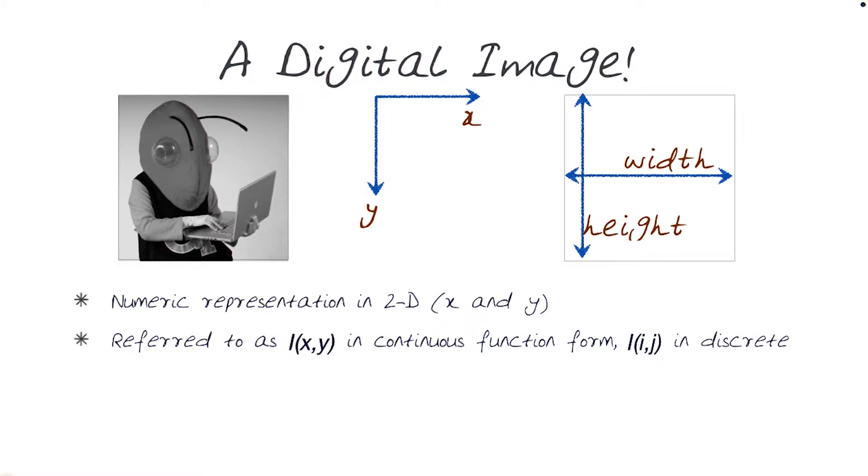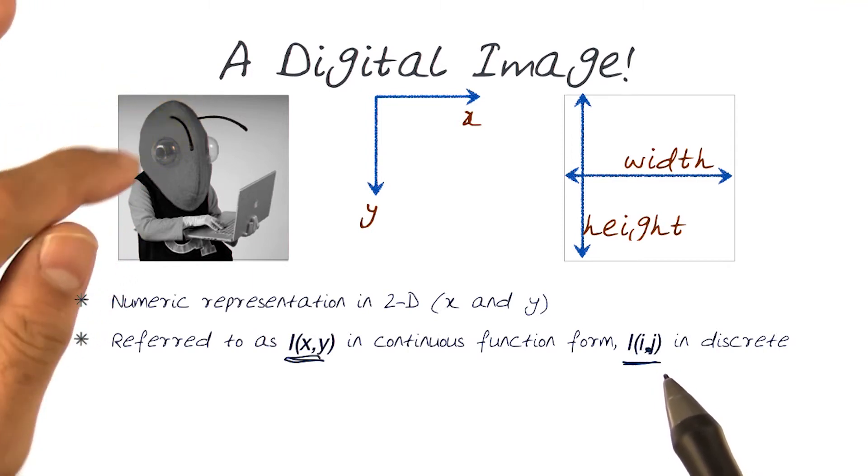The best way to refer to this would be a function i(x,y), which is a continuous function. Or if we have it discrete, we'd actually be able to refer to this as i(i,j). So i,j here would be discrete indices, which could be the number of the rows in the column that we're trying to traverse this thing.